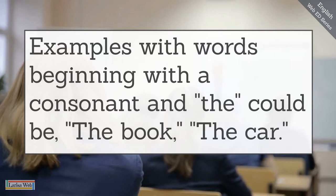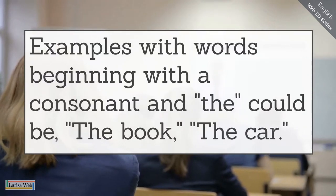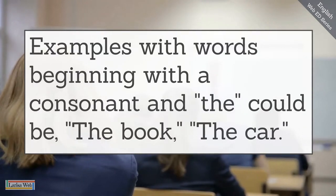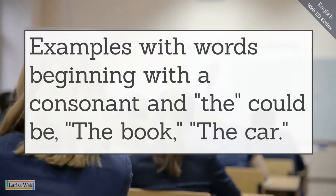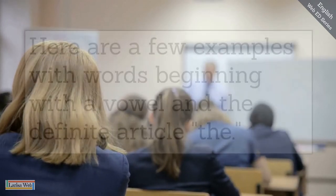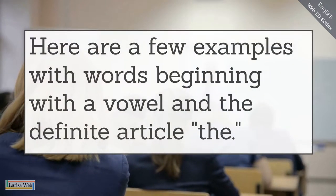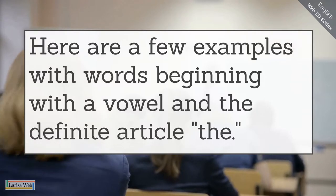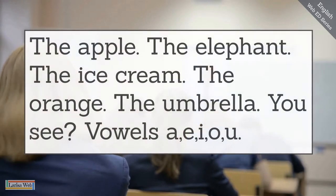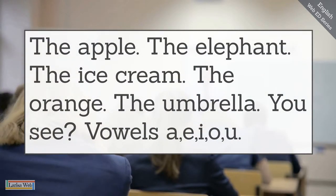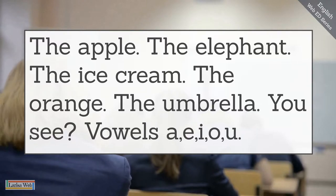Examples with words beginning with a consonant and the could be: the book, the car. Here are a few examples with words beginning with a vowel and the definite article the: the apple, the elephant, the ice cream, the orange, the umbrella.